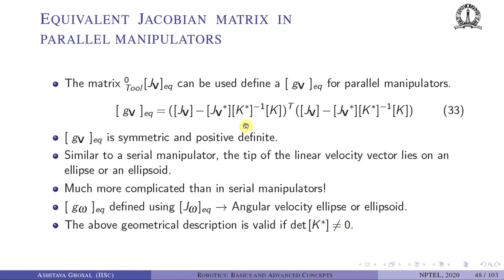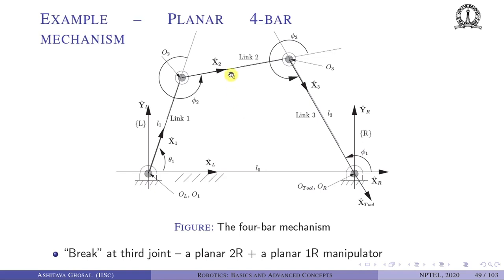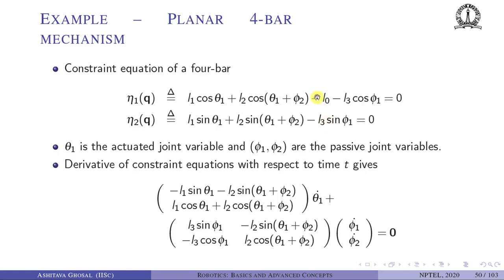As an example, consider the planar four-bar mechanism. We break it at the third joint, yielding one planar 2R manipulator with angles theta_1 and phi_2 (link lengths l1, l2) and one 1R arm with angle phi_1 and length l3. The constraint equation from breaking at the third joint is: l1·cos(theta_1) + l2·cos(theta_1 + phi_2) − l0 − l3·cos(phi_1) = 0 for the x-component, and the corresponding y-component equation.